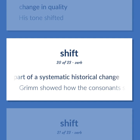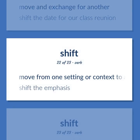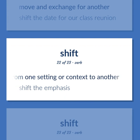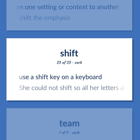Change phonetically as part of a systematic historical change — Grimm showed how the consonants shifted. Move in exchange for another — shift the date for our class reunion. Move from one setting or context to another — shift the emphasis. Use a shift key on a keyboard. She could not shift, so all her letters are written in lowercase.